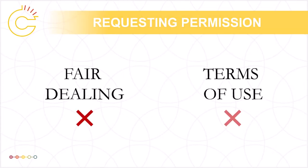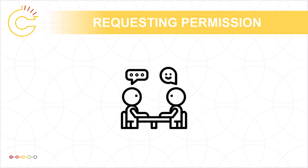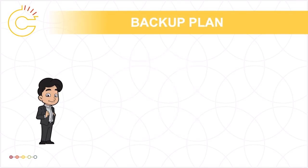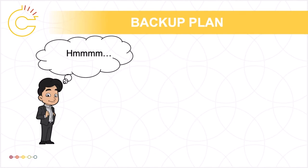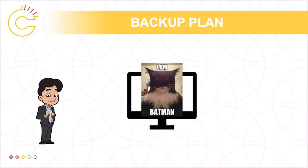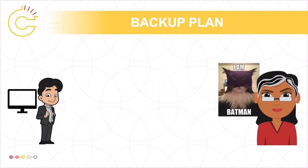If neither fair dealing nor the terms of use support your use of the work, you can ask the rights holder for permission. In some cases, the rights holder may want Sandy to pay for this permission, which is more likely if Sandy expects to make money from their reuse of the work. In other cases, the rights holder might refuse the request to use the work at all. So it's pretty good to have a backup plan. Sandy's backup plan could mean changing the way they use the work to make the dealing more fair — for example, instead of making a course assignment that includes third-party content available on the open web, Sandy could limit the distribution to their professor. Or it could mean choosing another work to use in the first place.